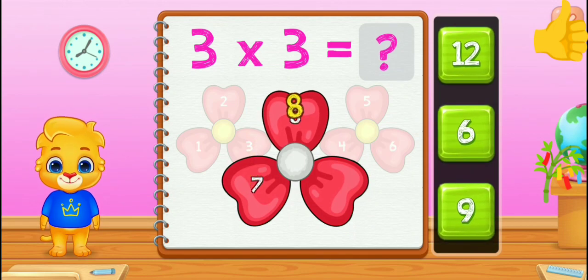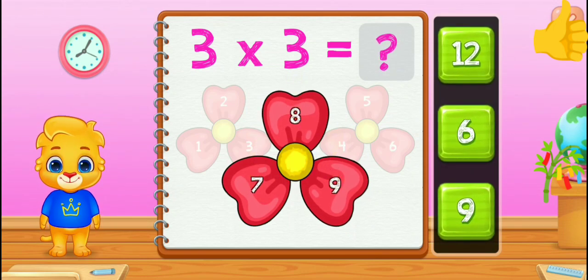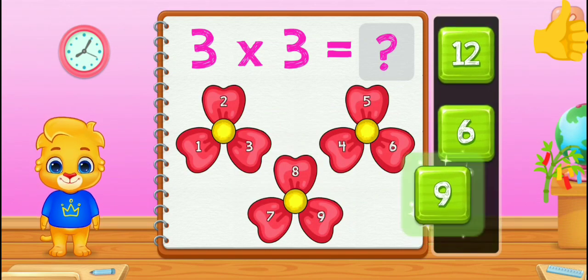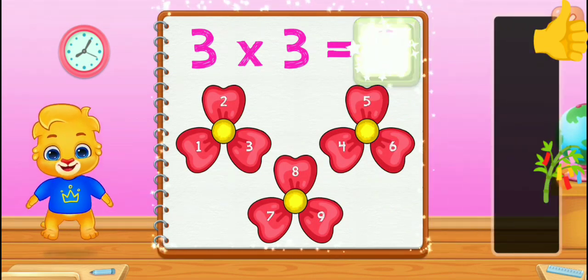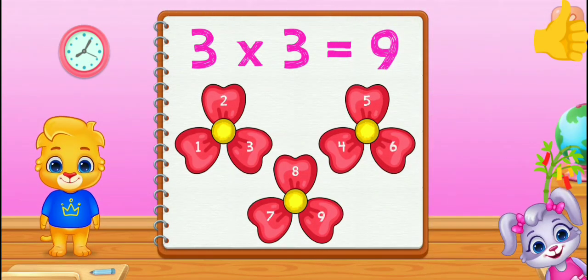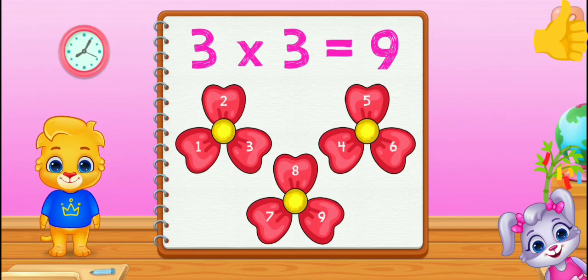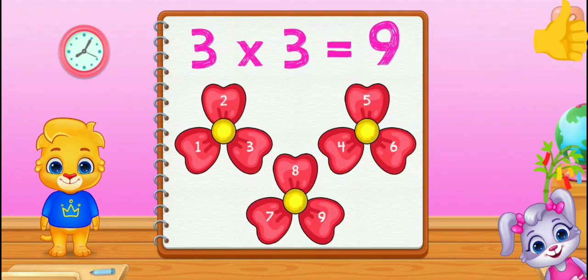Eight, nine. Three times three equals nine.